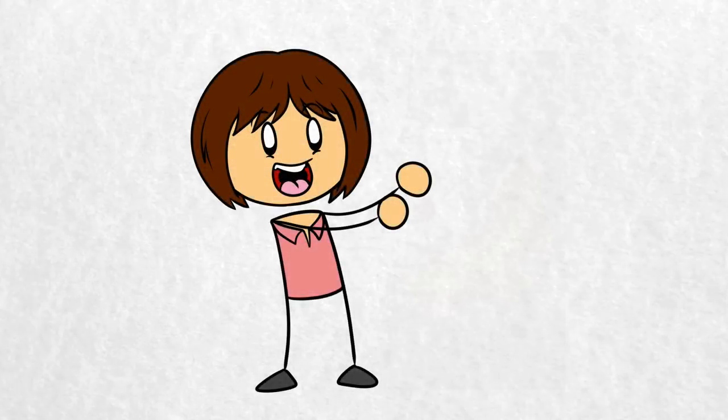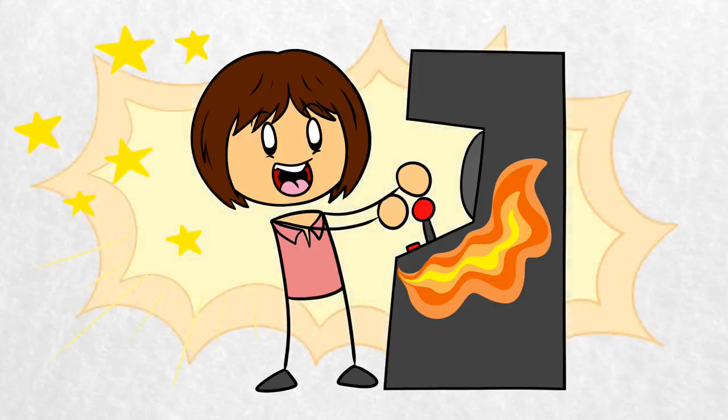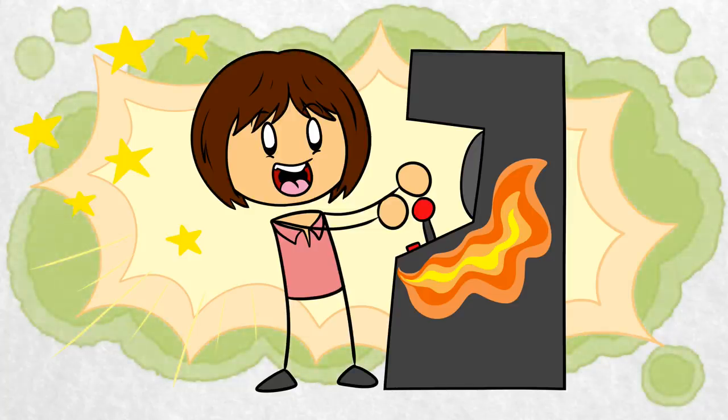When Masahiro Sakurai was a young man, he played a lot of arcade games. He was a superstar. He had a fifty-strong win streak on Street Fighter II. Nobody could beat him.